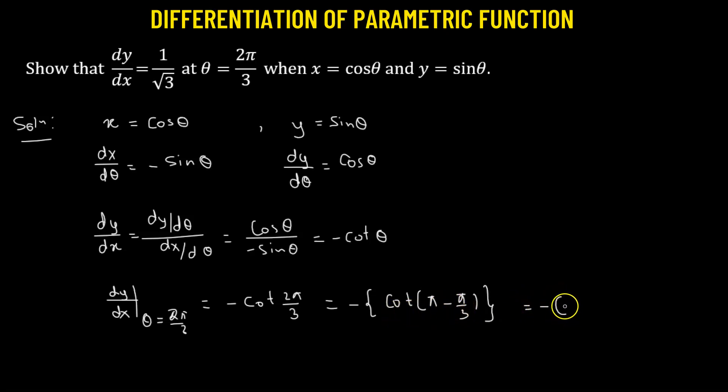This means this will be equals to negative of negative cotangent of π over 3. The negative and negative becomes positive, so we are now left with derivative of y with respect to x equals to cotangent of π over 3.